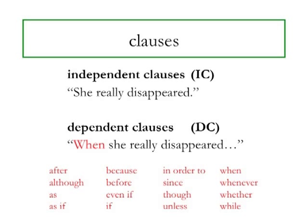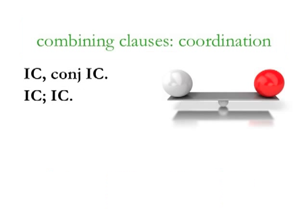Let's look at the different ways of combining clauses. You can combine two or more independent clauses into one sentence. When they share a sentence like this, the clauses are balanced — neither is more important than the other. This is called coordination. The two ways of coordinating clauses are to connect them with a comma and a conjunction, or to connect them with a semicolon.